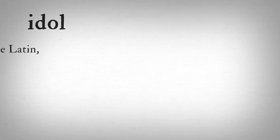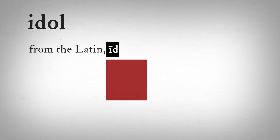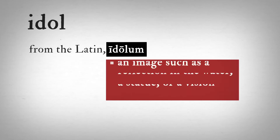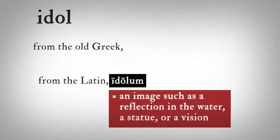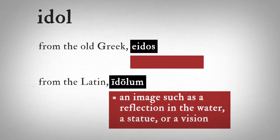Idol derives from the Latin word eidolum, meaning an image such as a reflection in the water, a statue, or a vision. This Latin word in turn derives from the older Greek word eidos, which means form or shape.